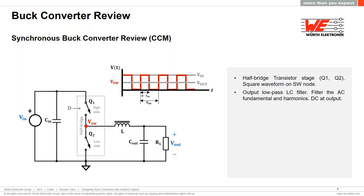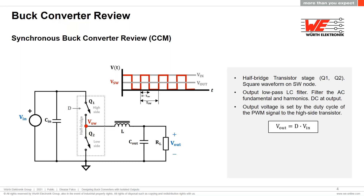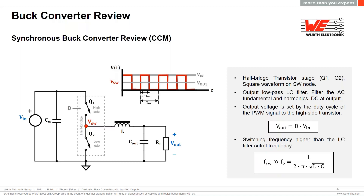A second-order low-pass LC filter is connected to the switch node. This stage filters the fundamental frequency and the harmonics of the square waveform, leaving only the DC level at the output. The output voltage corresponds to the average value of the square waveform at the switch node and can be adjusted by changing the on-time of the high-side MOSFET — its conduction time — meaning the duty cycle of the PWM control signal. For this to work, the cutoff frequency of the output LC filter must be set lower than the switching frequency.